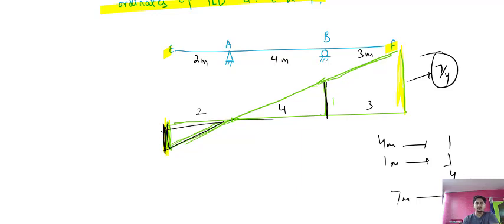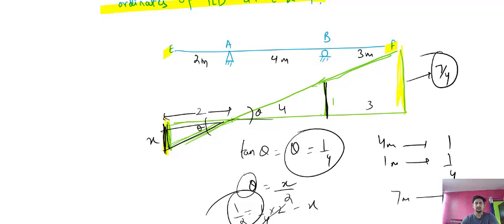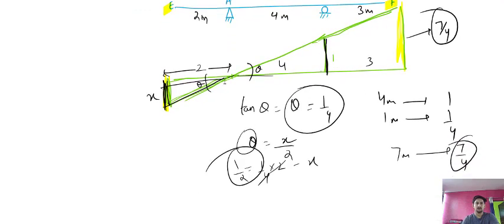For the ordinate at point E, suppose this angle is theta. Since the angle is small, tan(theta) ≈ theta = 1/4 (perpendicular upon base). Theta is the same on the other side. The distance is 2 meters, so theta = x/2 = 1/4, giving x = 1/2. So the ordinate at E is 1/2.